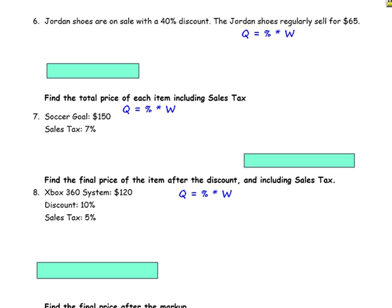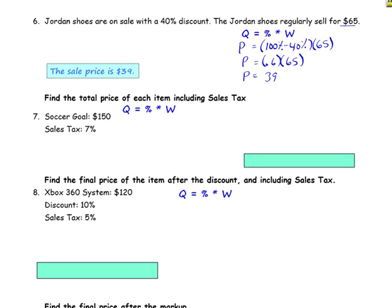Number 6: Jordan's shoes are on sale with a 40% discount. Jordan's shoes regularly sell for $65. We are looking for the sale price, which is the quantity. The percent needs to be subtracted from 100, so 100% minus 40%. Multiply that by the regular price of $65. We pay 60% of the shoes, which is 0.60. Multiply by the regular price to get the sale price. When you do the math, you should get $39. The sale price is $39.